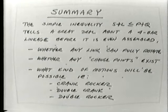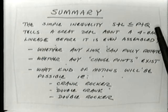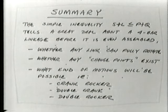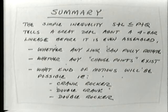In summary, the Grashoff condition provides a very simple test — the inequality S + L ≤ P + Q — that tells an amazing amount about a four-bar linkage before you ever assemble it. It tells you whether any link can fully rotate, whether any change points exist, and what kinds of motion are possible: if the inequality is true, you can get a crank rocker, double crank, or double rocker; if false, you can only get a double rocker.